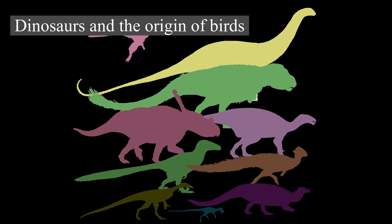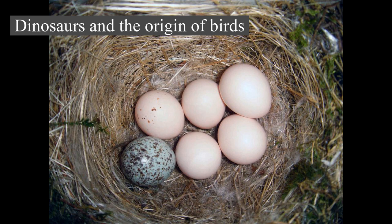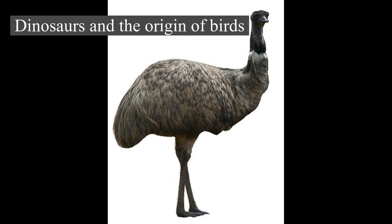The late Jurassic Archaeopteryx is well known as one of the first transitional fossils to be found, and it provided support for the theory of evolution. In the late 19th century, Archaeopteryx was the first fossil to display both clearly traditional reptilian characteristics — teeth, clawed fingers, and a long lizard-like tail — as well as wings with flight feathers similar to those of modern birds. It is not considered a direct ancestor of birds, though it is possibly closely related to the true ancestor.